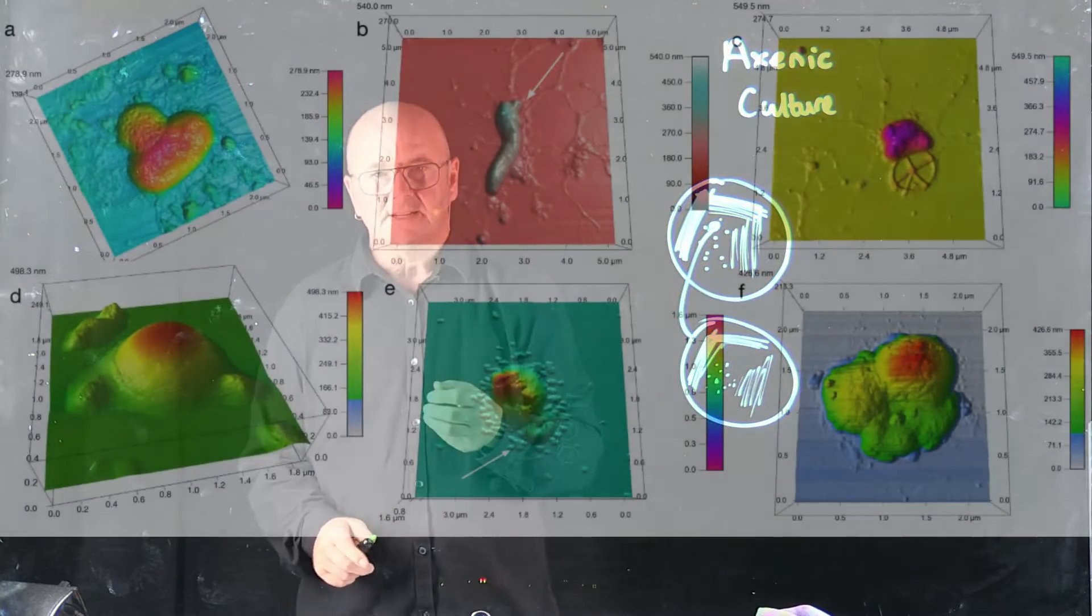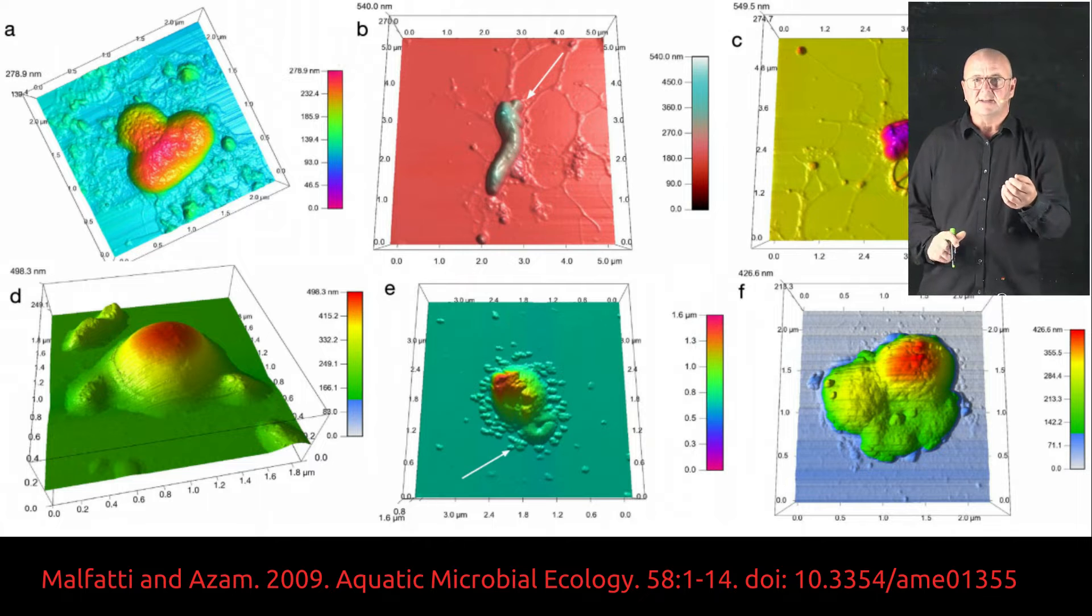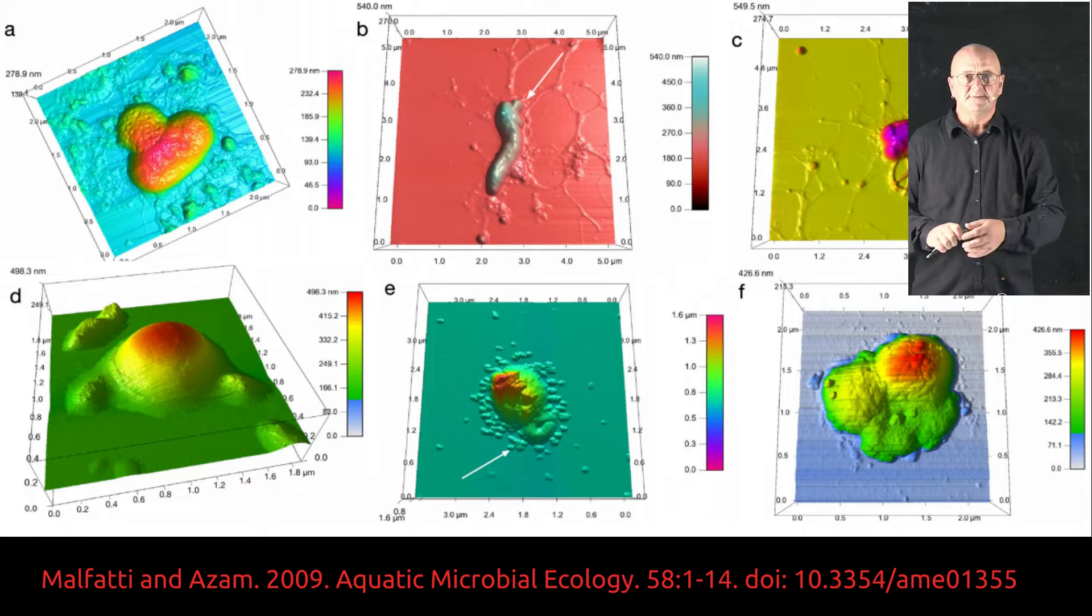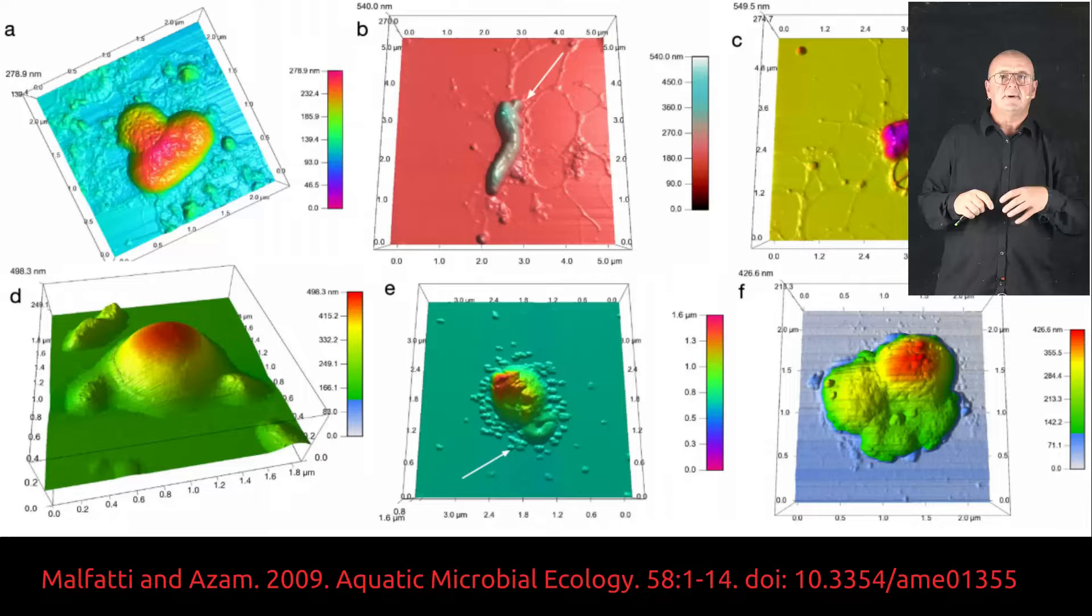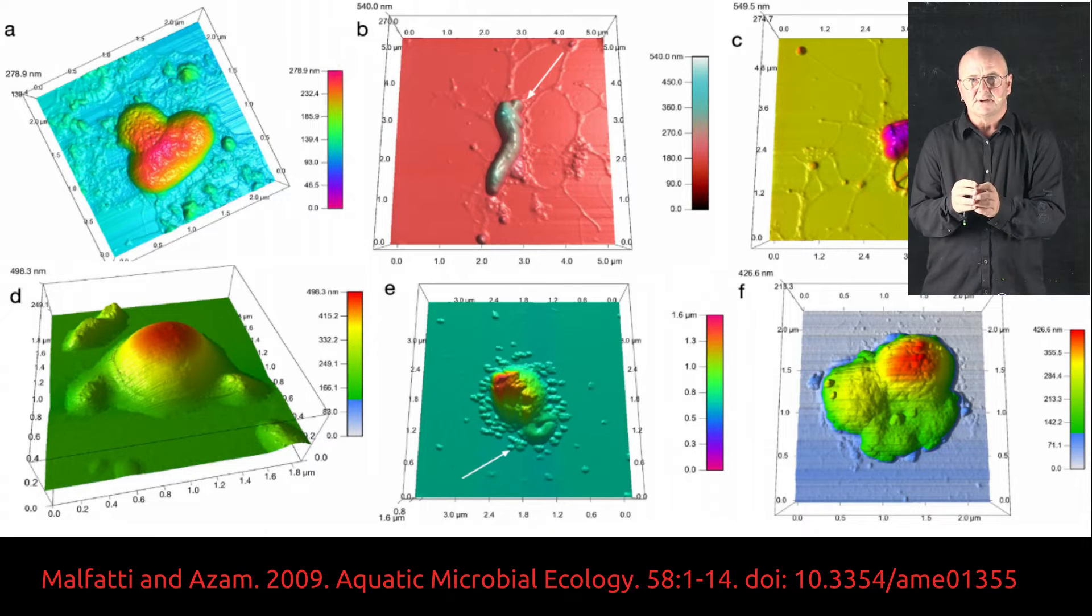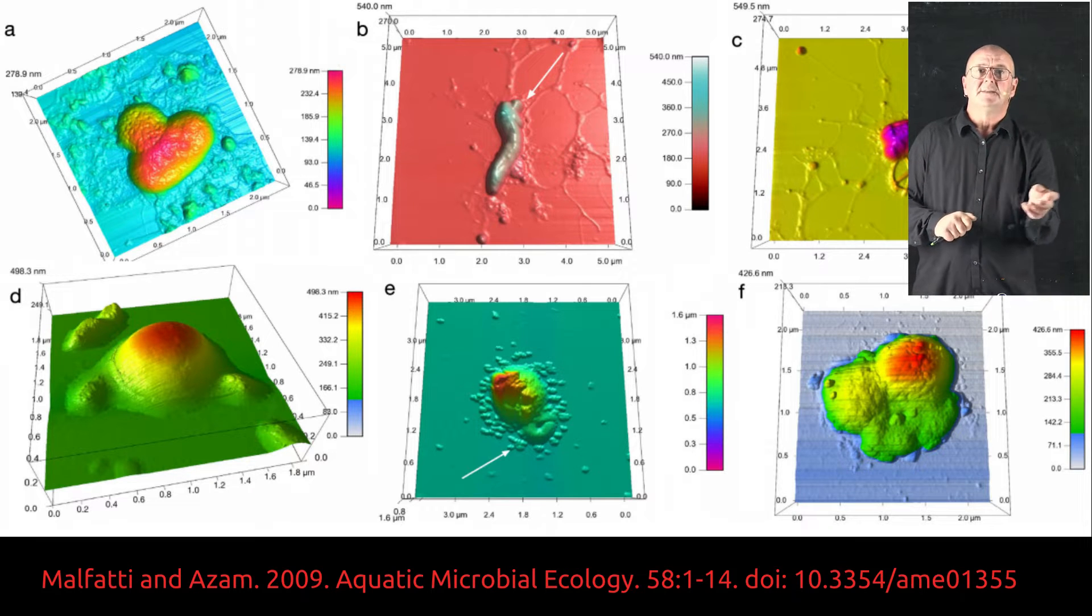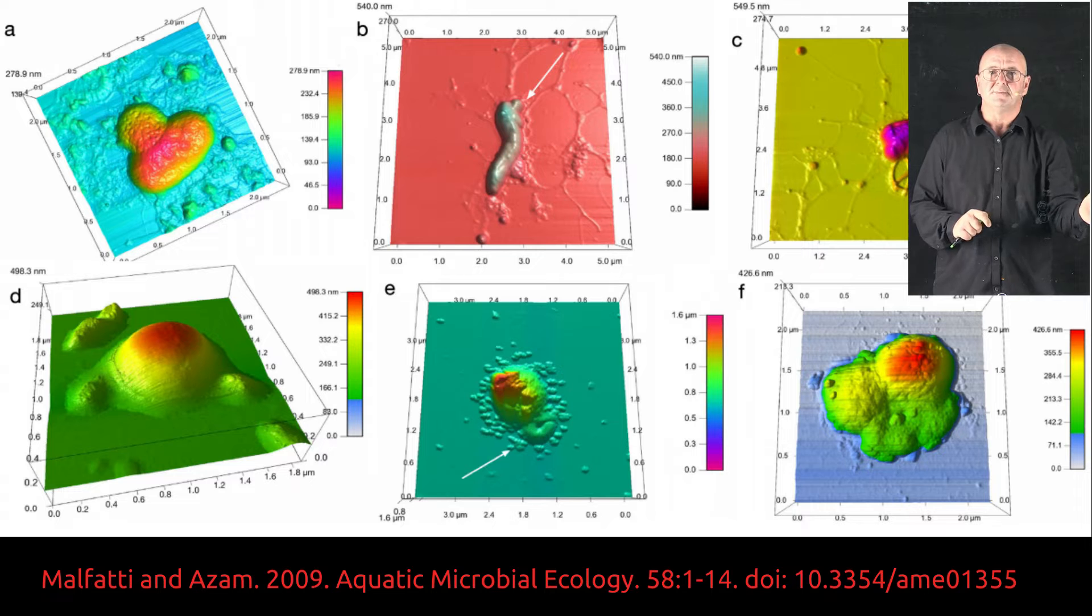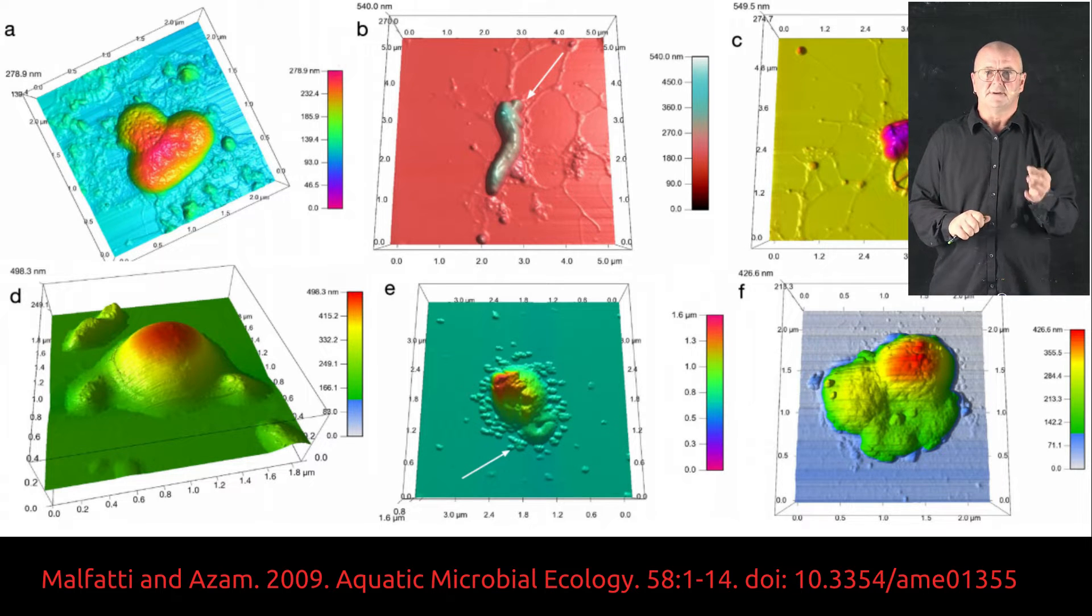It turns out in practice that this doesn't happen. And part of the reason is shown in these beautiful atomic force microscope images that I'm showing here, where we have bacteria that are in really close association with either other bacteria or archaea. These associations often are so tight that even if you streak out cultures multiple times, you can never get a simply pure culture.